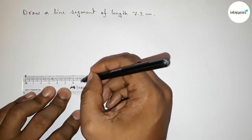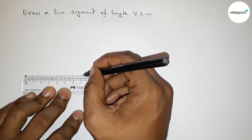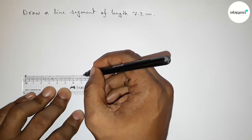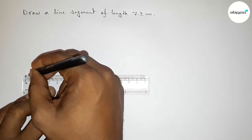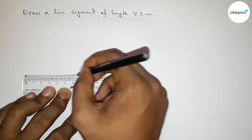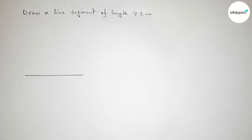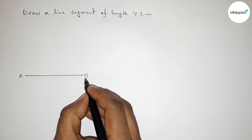Six, seven. This is seven and 7.1, and this is 7.2. After seven, we have to count two more on the scale. So this is 7.2 centimeter. Now joining this line. Taking here point A and here point B.